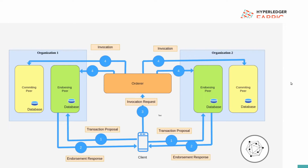Once the orderer delivers that block to all the committing and endorsing peers, each peer first checks whether the signature of that block is valid - meaning it's a valid signature of the orderer. If the signature is valid, each peer decodes all the transactions inside that block and sends them to the Validation System Chain Code, VSCC. VSCC checks each transaction endorsement and whether it is fulfilling the endorsement policy as per the chaincode. If it is not fulfilling the endorsement policy, then that transaction gets marked as invalid.